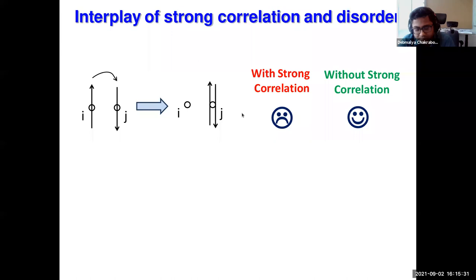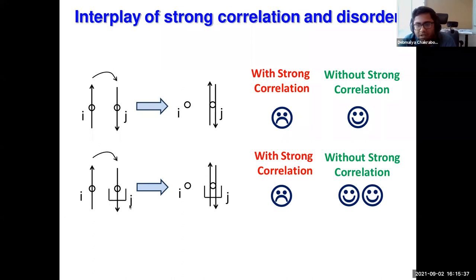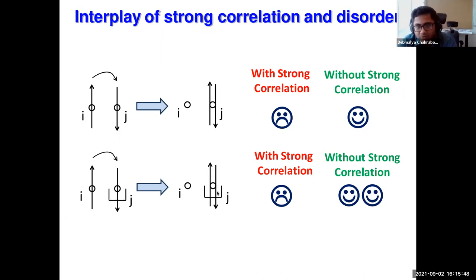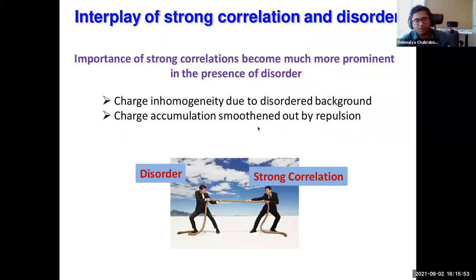With strong correlation, the hopping is not allowed. Now suppose we have disorder — let's mimic it by putting an attractive potential at the j site. So if you go from i to j, it goes from a higher potential to a lower potential. Without strong correlation it's an even happier hopping, whereas if you have strong correlation this hopping is anyway blocked. This shows that the importance of strong correlations becomes much more prominent if you have disorder in the system.